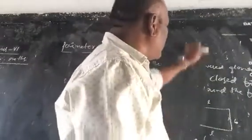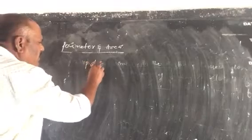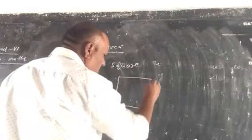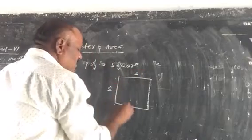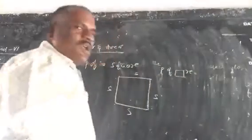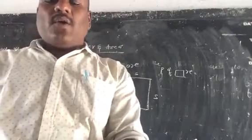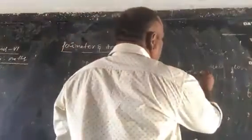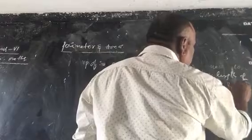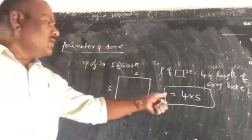Now how to find the formula for the perimeter of a square. A square has all sides equal. So P of square equals 4 into the length of any side, that is 4 into S. So the formula is P of square equals 4S.